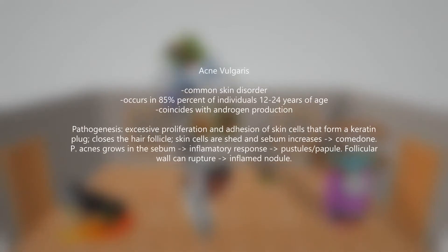Acne vulgaris is a common skin disorder that occurs in about 85% of individuals between the ages of 12 and 24, coinciding with puberty and androgen production. It begins with excessive proliferation and adhesion of skin cells that form a keratin plug, which closes up the hair follicle. Within this closed hair follicle, skin cells are shed and sebum production continues, causing the follicle to dilate and form a comedone.